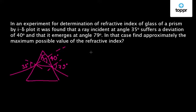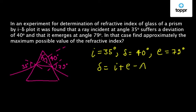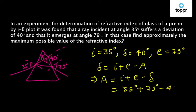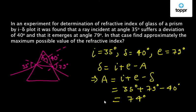We can write that the incidence angle I is equal to 35 degrees, the deviation angle delta is equal to 40 degrees, and the emergence angle E is equal to 79 degrees. Now we know that delta is equal to I plus E minus A. So from here, we can calculate the prism angle A is equal to I plus E minus delta. This is equal to 35 degrees plus 79 degrees minus 40 degrees, which is equal to 74 degrees.